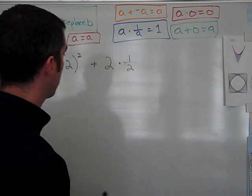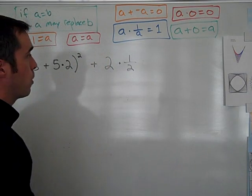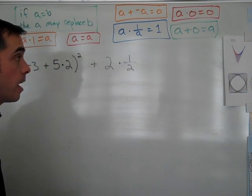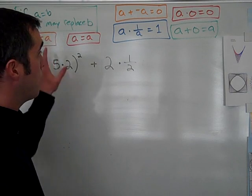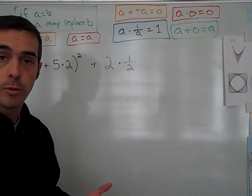So I'm going to work through this order of operations problem, which is found in your notes, step by step, and explain the justification through the properties of equality, why I'm allowed to perform each step.